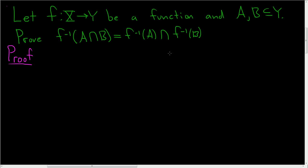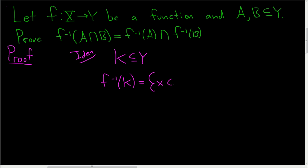If you have a subset K of capital Y, this is the idea of what this means. This is called the inverse image, or the preimage, of K under F. It's the set of all of the X's in the domain of F — capital X is the domain — such that F of X is in K. So it's all of the X's that get mapped to K.